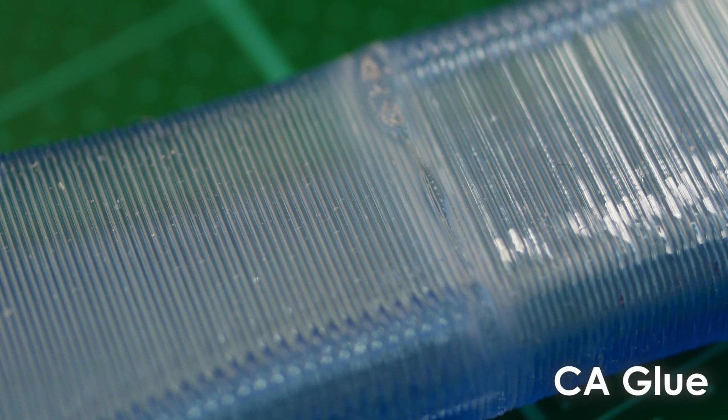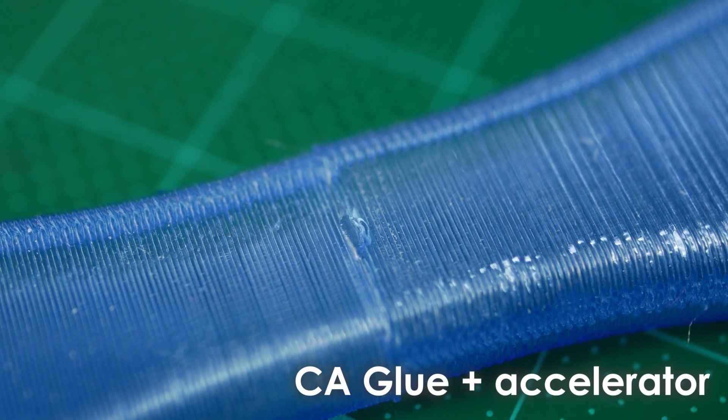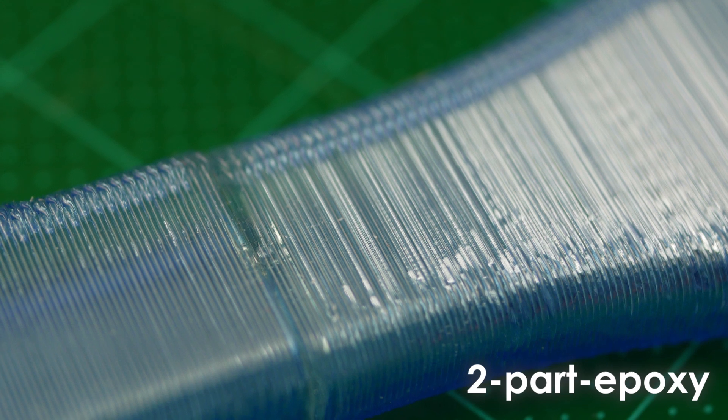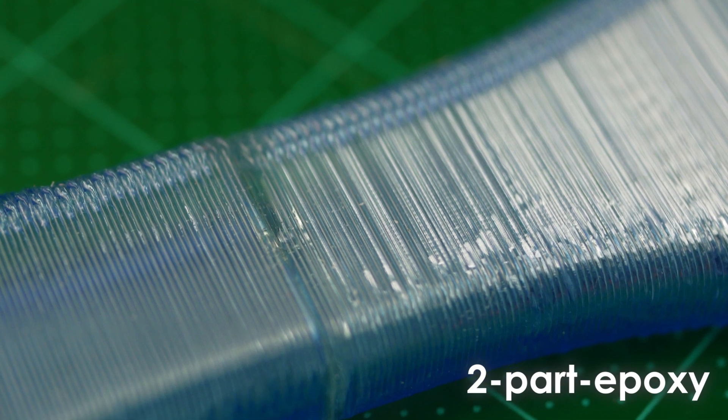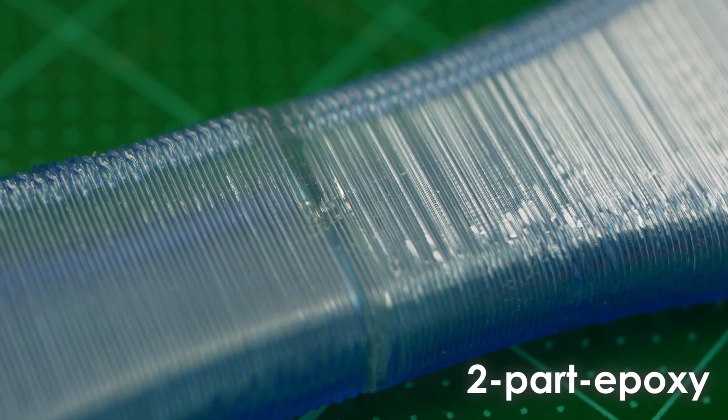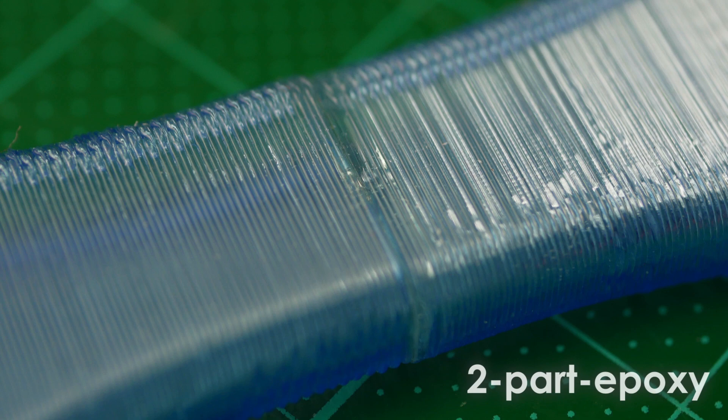The superglue samples showed white clouds around the seam which wasn't present on the ones where I used the accelerator. Even though the epoxy was not the easiest in handling because it took a while until it set and applying only a small amount on the part wasn't really that easy, the seam looked quite clean after the epoxy cured transparent.